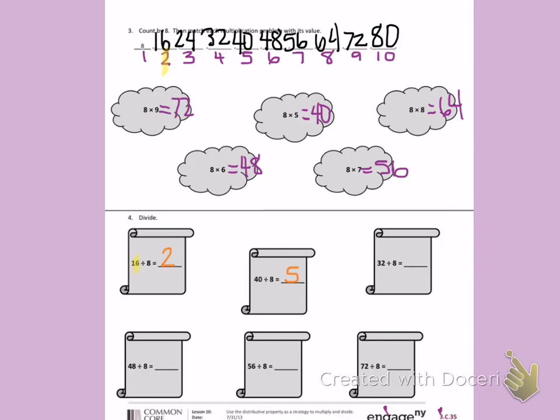32 divided by 8, I look at my count by, I have to count by 8s 4 times to get to 32. 48 divided by 8, looking at my count by, I have to count by 8, 6 times to get to 48.